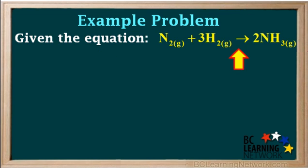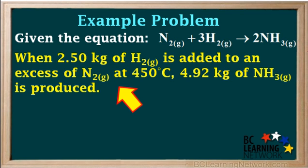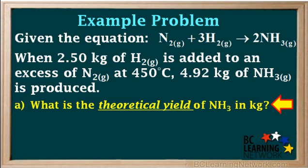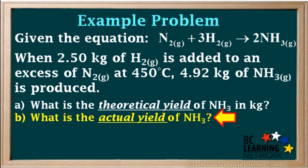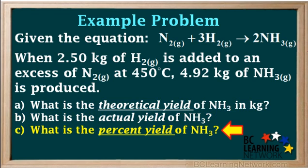This problem illustrates an example of such a situation. Given the equation N₂ + 3H₂ → 2NH₃, when 2.5 kilograms of hydrogen is added to an excess of nitrogen at 450 degrees Celsius, 4.92 kilograms of ammonia is produced. Just a note here: the actual and percent yields in this reaction do depend on temperature, so it is stated here. The temperature itself is not used anywhere in the calculations, so you can ignore it. Part A asks for the theoretical yield of NH₃ in kilograms.